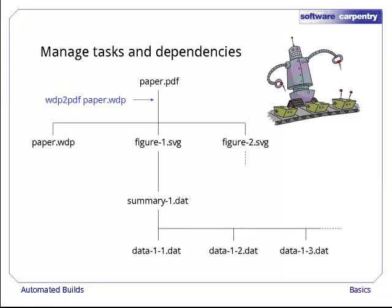In order to create paper.pdf, we have to run the command wdp2pdf paper.wdp. For the purpose of this lecture, it doesn't matter what wdp2pdf actually does. All we need to know is that if paper.wdp or either of the figure.svgs change, we need to rerun this command.